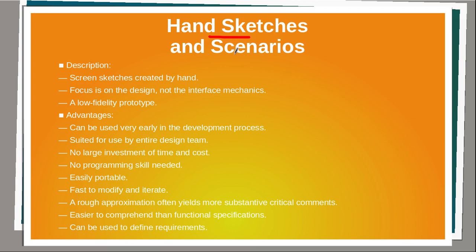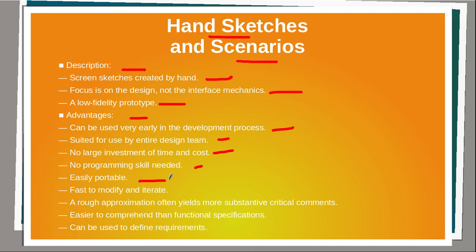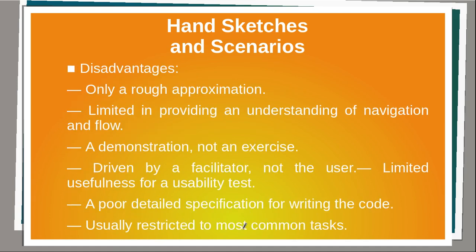The first type is hand sketches and scenarios. A screen sketch is created by hand; focus is on the design, not the interface mechanics. A hand sketch is a low fidelity prototype. Advantages of hand sketches are: can be used very early in the development process, suited for use by the entire design team, no large investment of time and cost, no programming skill is needed, easily portable, fast to modify and iterate, rough approximation often yields more substantive critical comments, easier to comprehend than functional specifications, and can be used to redefine requirements.